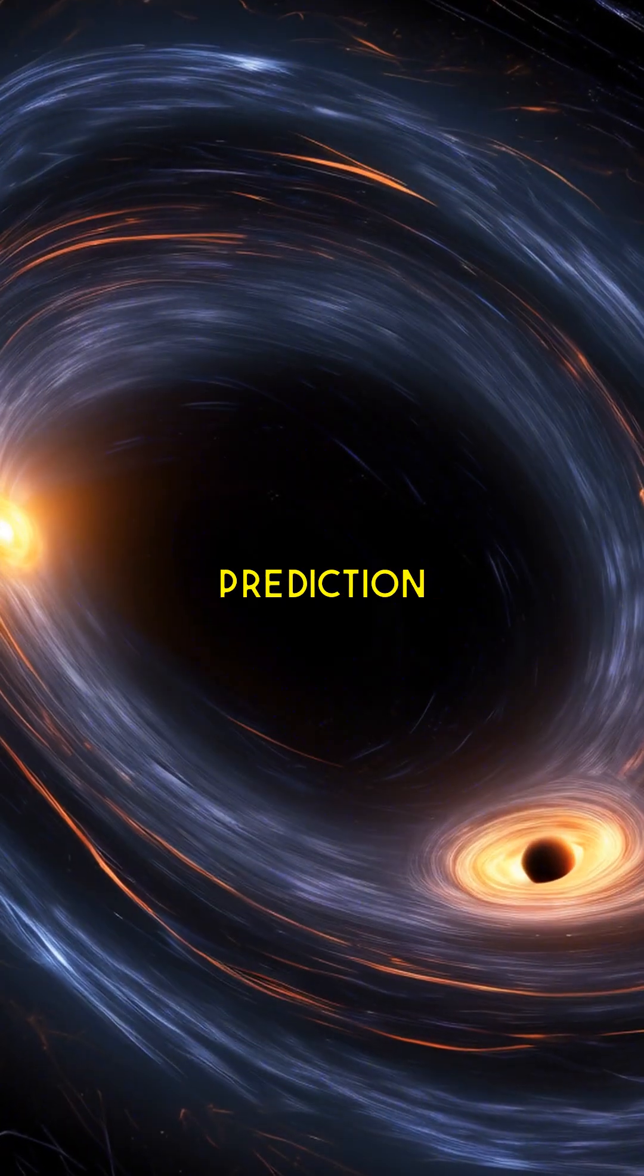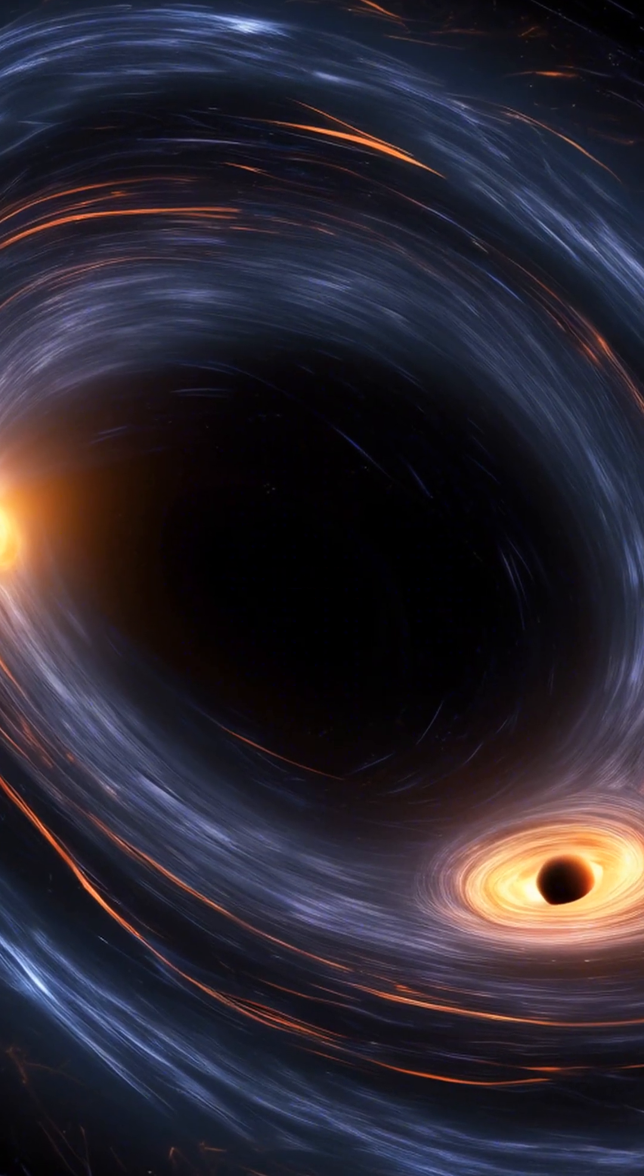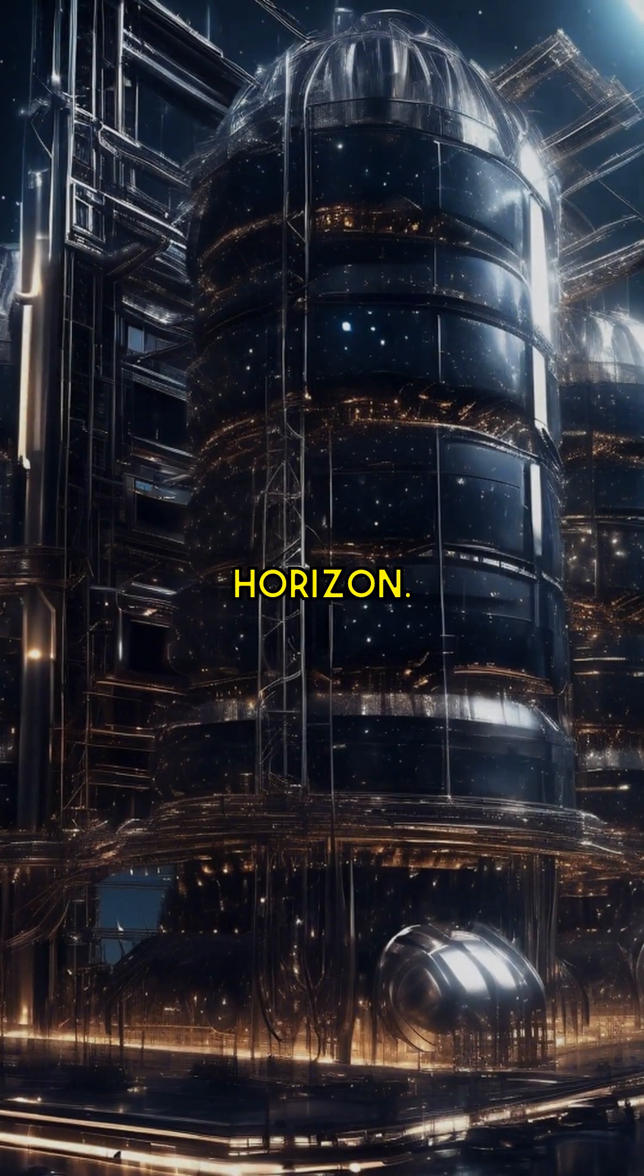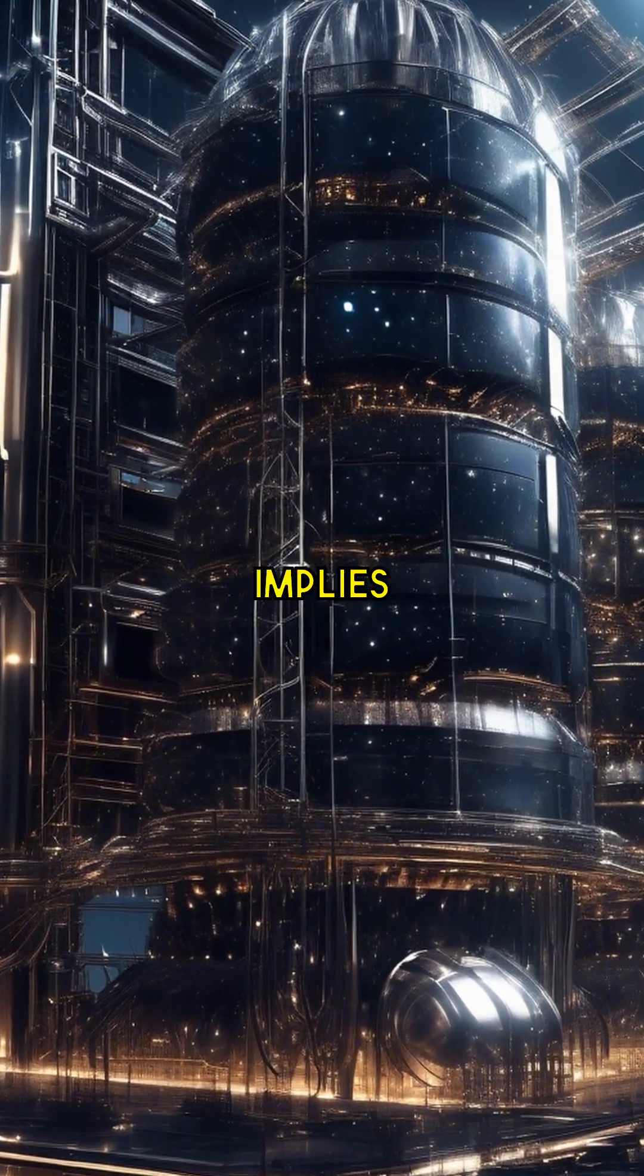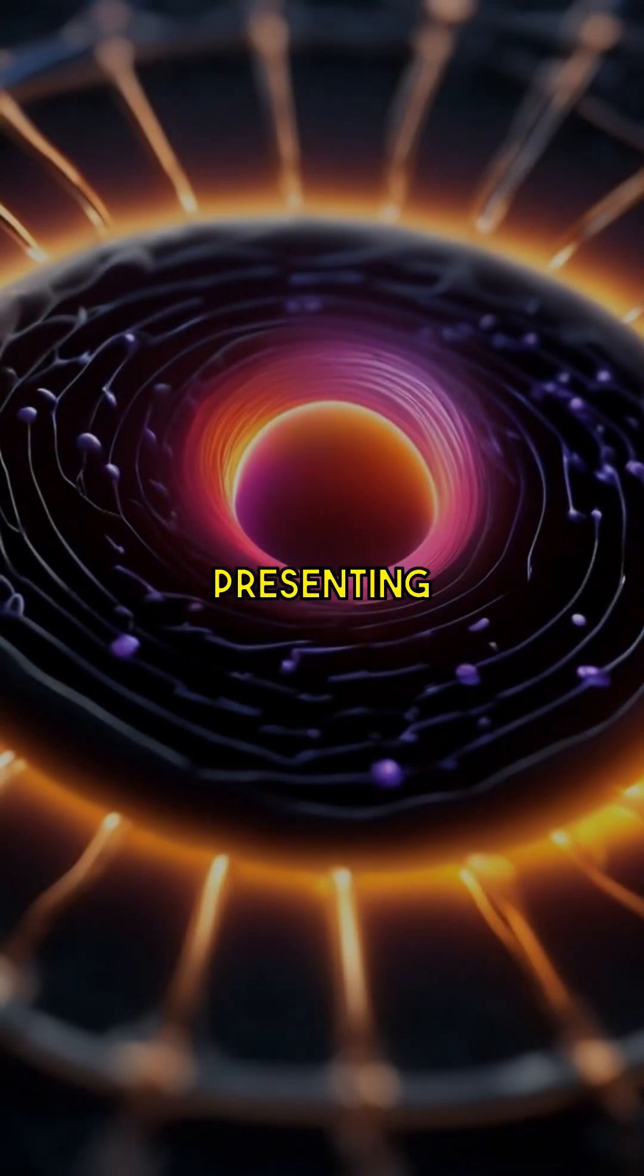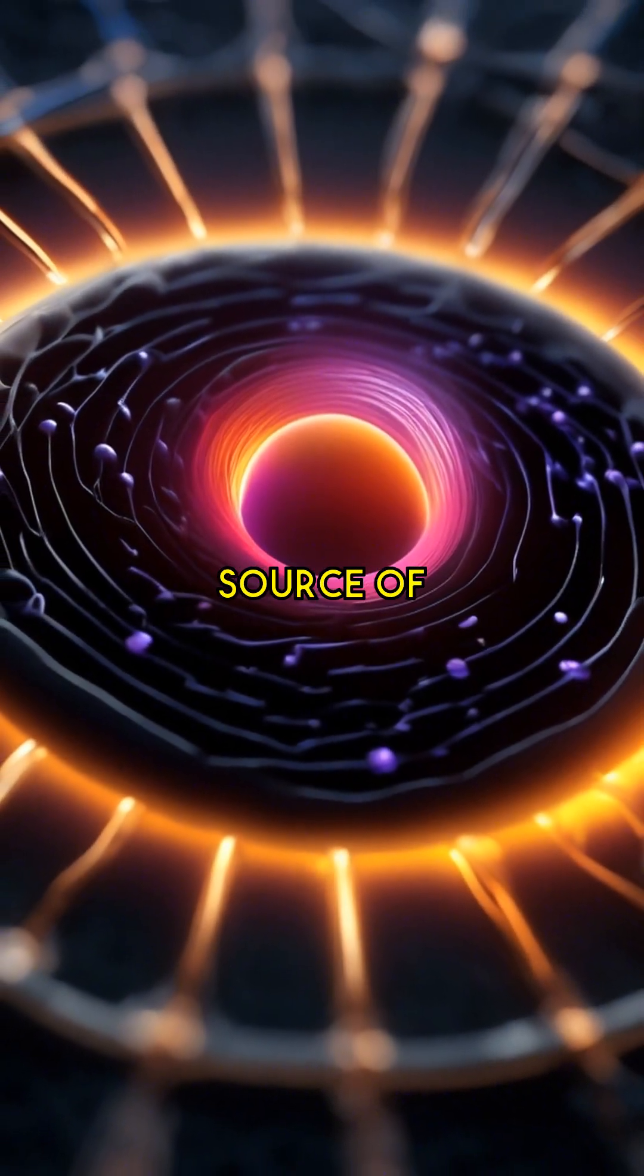Hawking radiation is a theoretical prediction that suggests black holes emit radiation due to quantum effects near the event horizon. This radiation implies that black holes can slowly lose mass and energy, presenting a potential source of power.